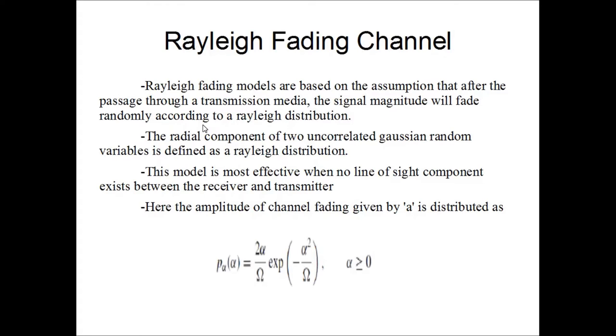And secondly, we have the Rayleigh fading channel. The basic Rayleigh fading channel is based on the assumption that after a signal passes through a transmission media, the magnitude of the signal will deteriorate, will attenuate randomly, and it follows a Rayleigh distribution.